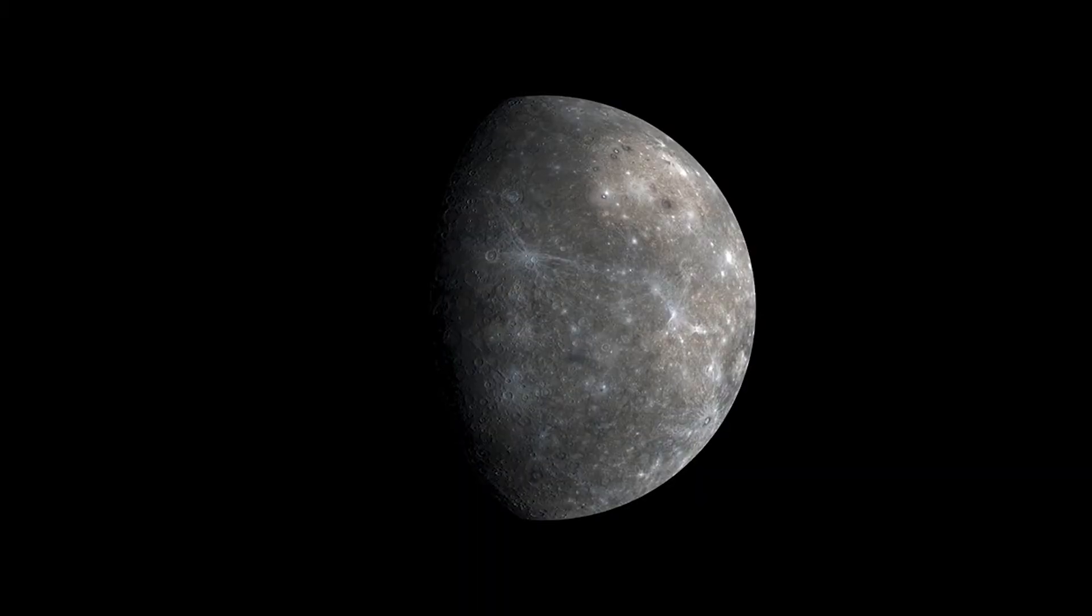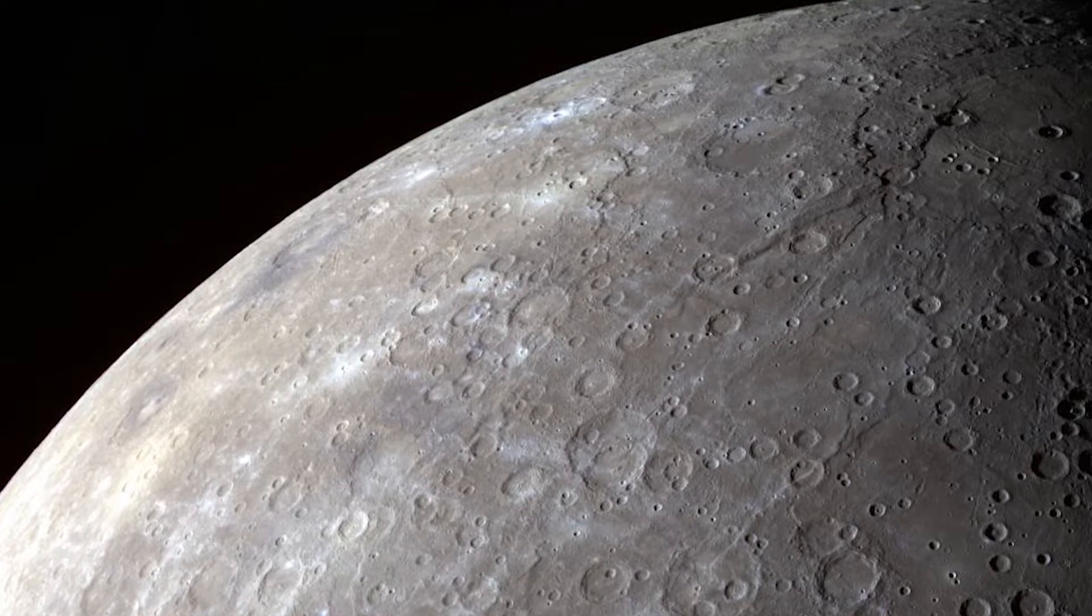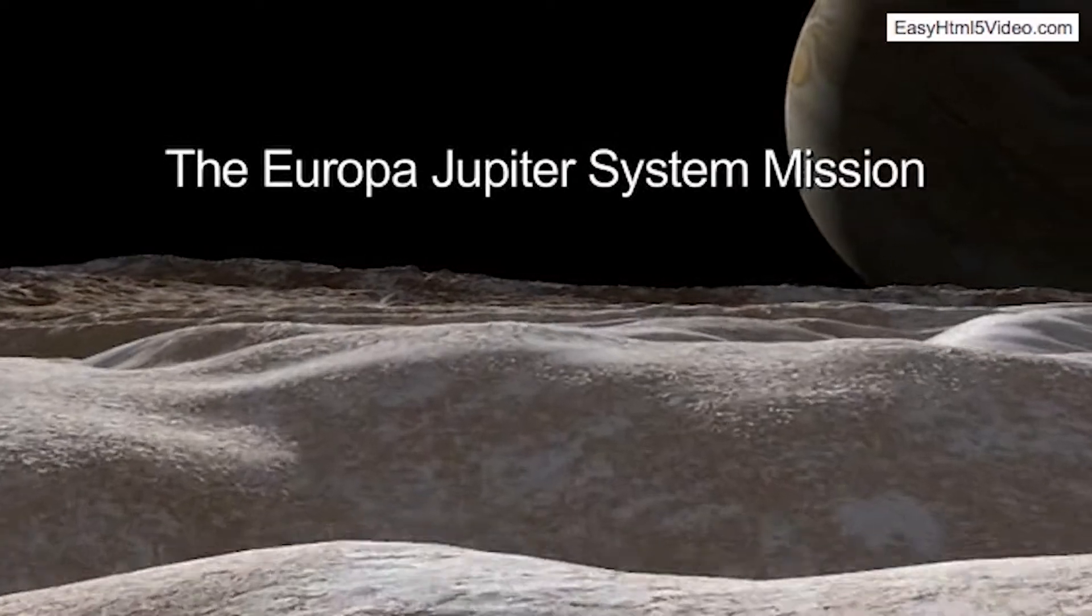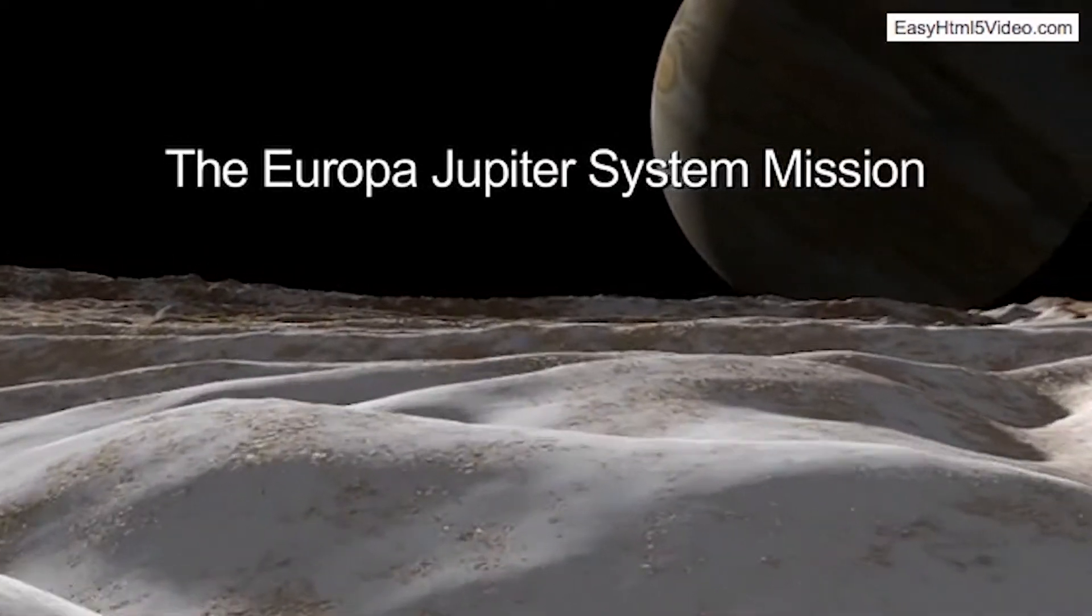There are icy moons in the outer solar system like Saturn's moon Enceladus and Jupiter's moon Europa that look like they may have subsurface oceans that could be habitable. And that's just what's in our solar system.